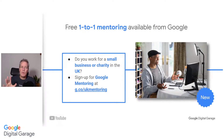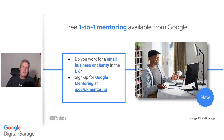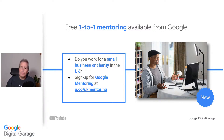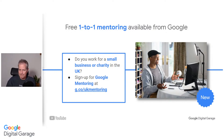There is a great opportunity — free one-to-one mentoring available from Google. At the moment it's only for small businesses or charities in the UK, but hopefully it will expand to the rest of the world. If you are part of a small business or charity in the UK, you can sign up at g.co.uk/mentoring. One of us will give you assistance, advice, and support — whatever stage your business is at, whether it's a business plan or whatever it might be.